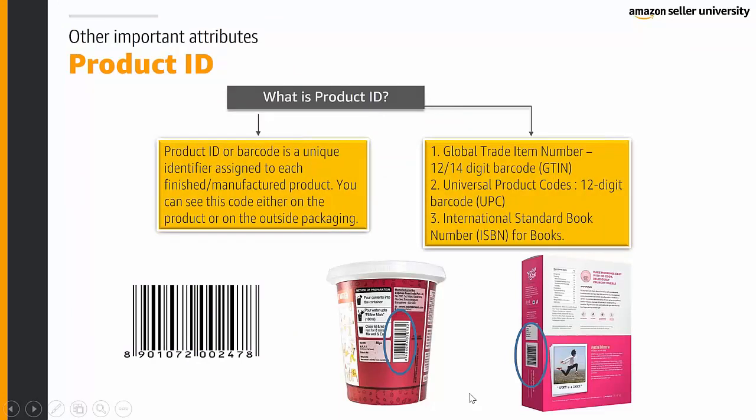Other important attributes — first is the product ID. A product ID or barcode is a unique identifier assigned to each finished or manufactured product. You can see this code either on the product or on the outside packaging. Some accepted product IDs on Amazon are the Global Trade Identification Number (GTIN), which are 12-digit or 14-digit barcodes; Universal Product Code (UPC), which are 12-digit barcodes; and International Standard Book Number (ISBN) for books only.